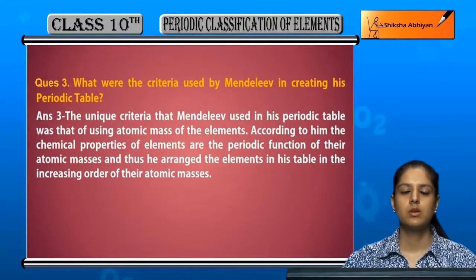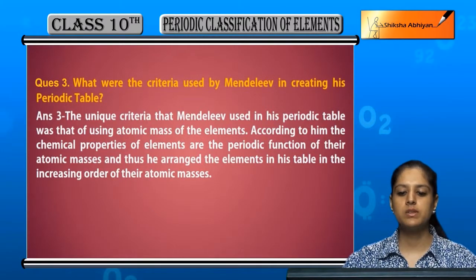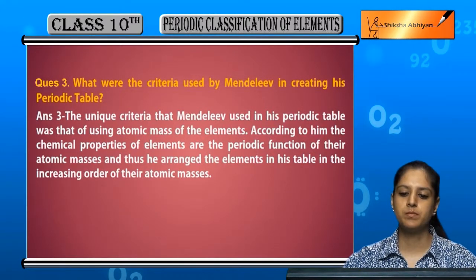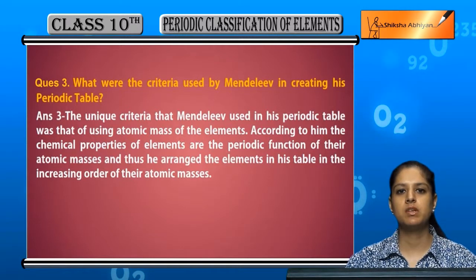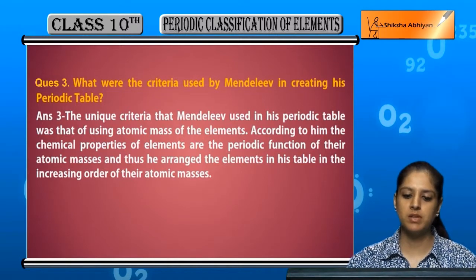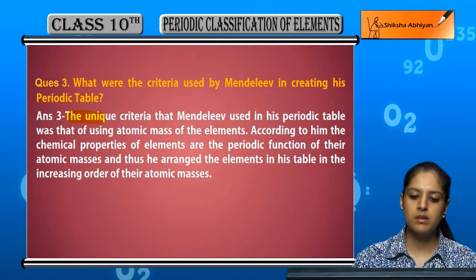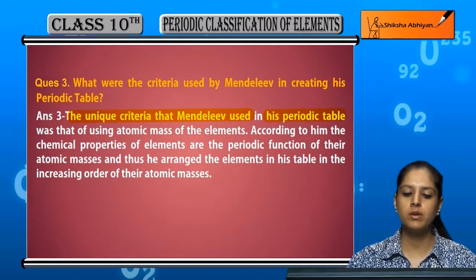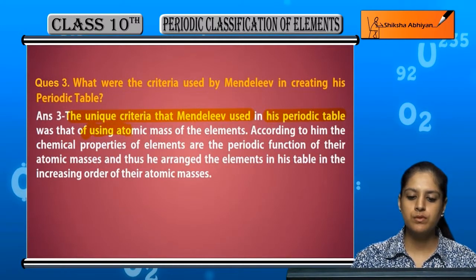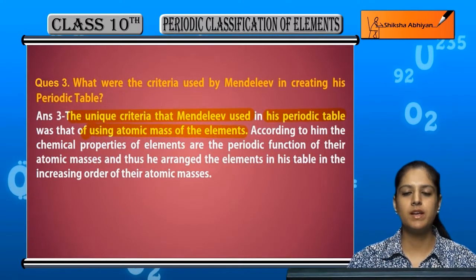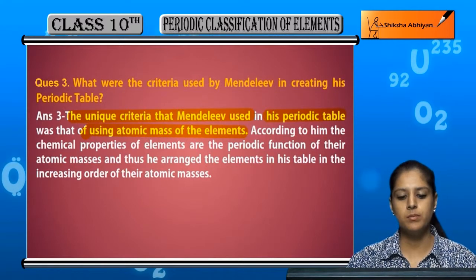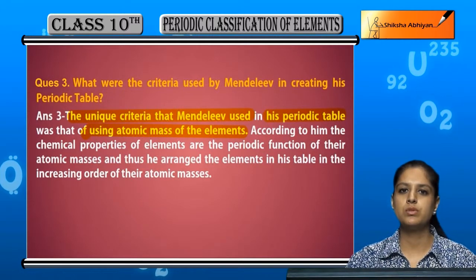Question number 3: What were the criteria used by Mendeleev in creating his periodic table? Mendeleev's periodic table was based on the atomic mass of elements. Every element has an atomic mass assigned, and Mendeleev used atomic mass as the foundation for his table.